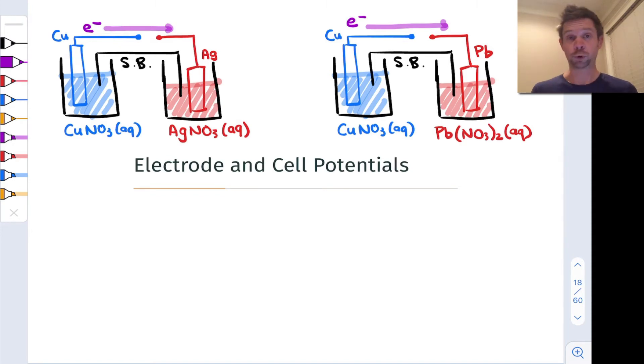And so we throw in a salt bridge, we connect the two half cells together, we go to measure the voltage, and the voltage comes out negative. Whoops! Indicating that in fact electrons are not flowing from left to right spontaneously but from right to left. Electrons are flowing this way.